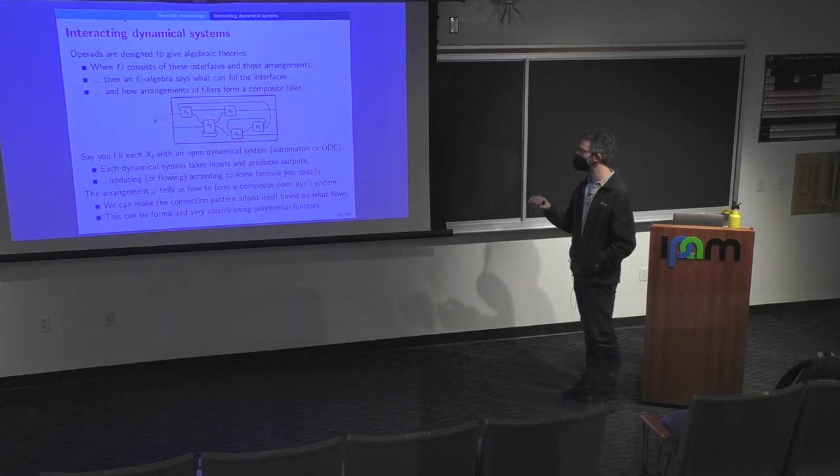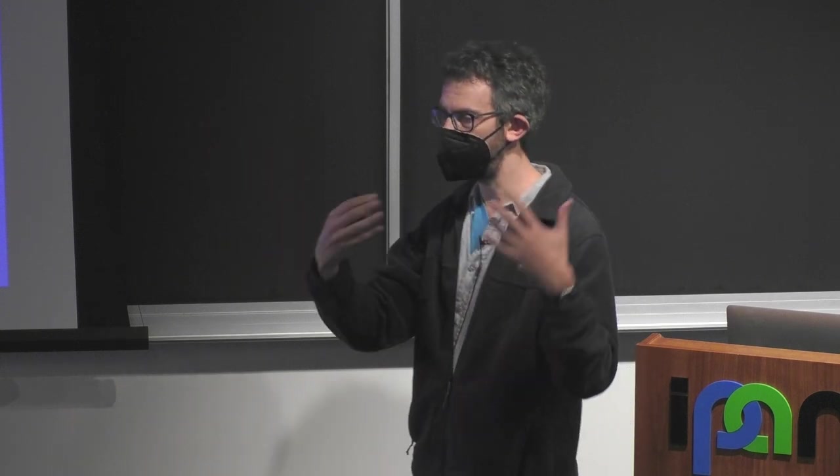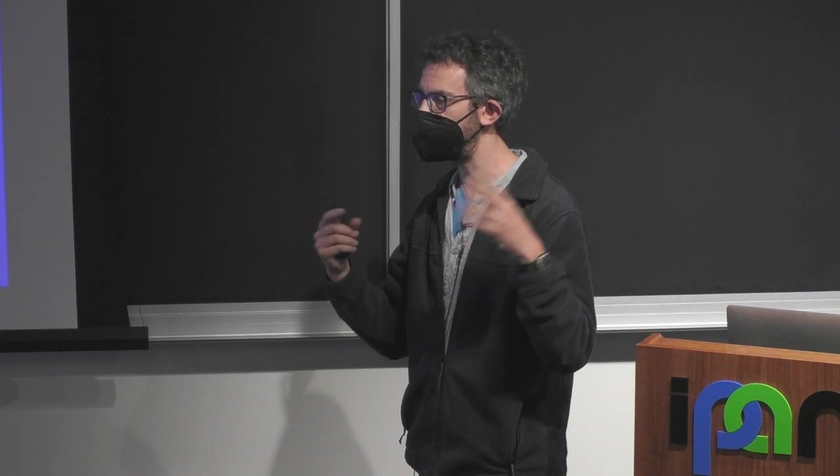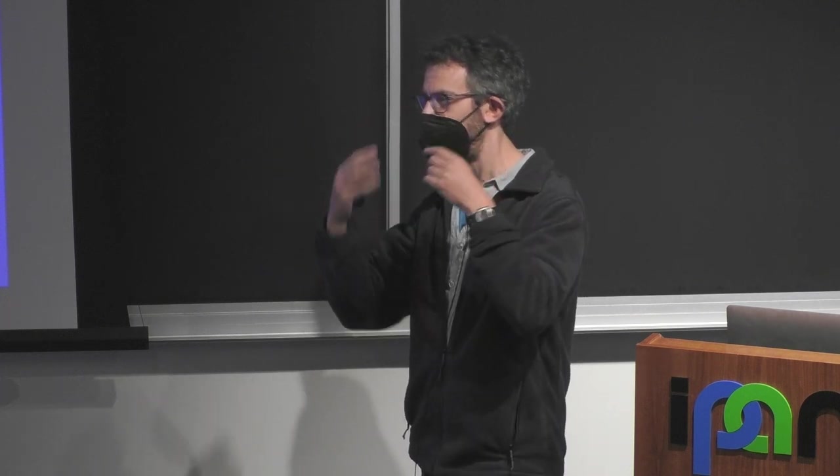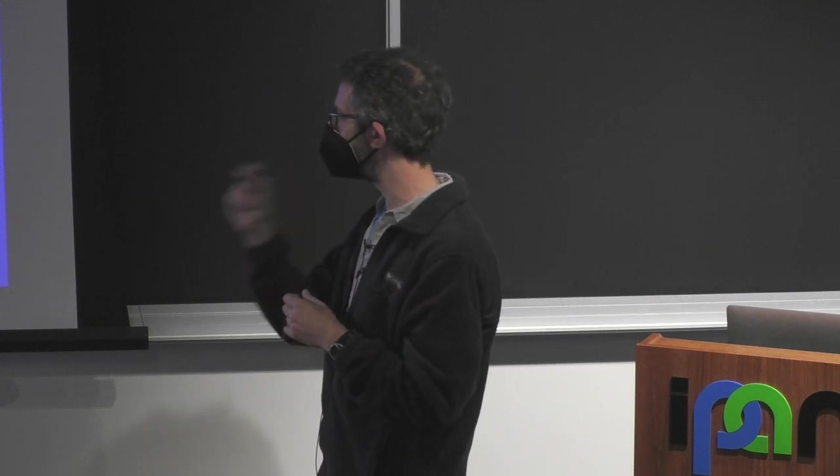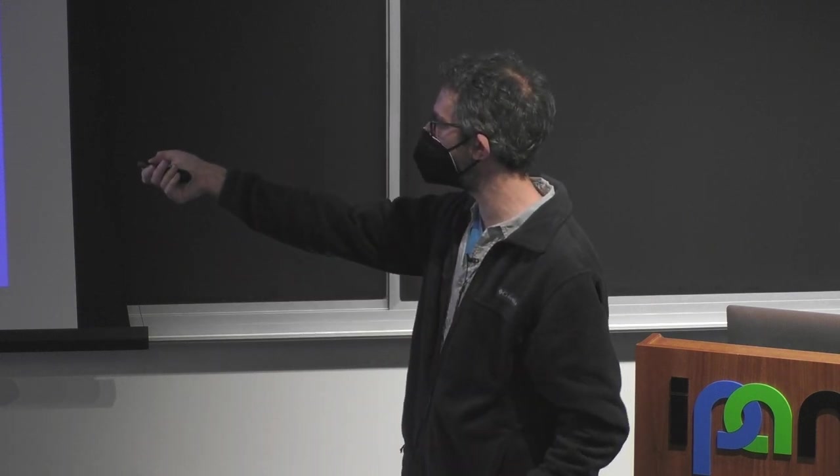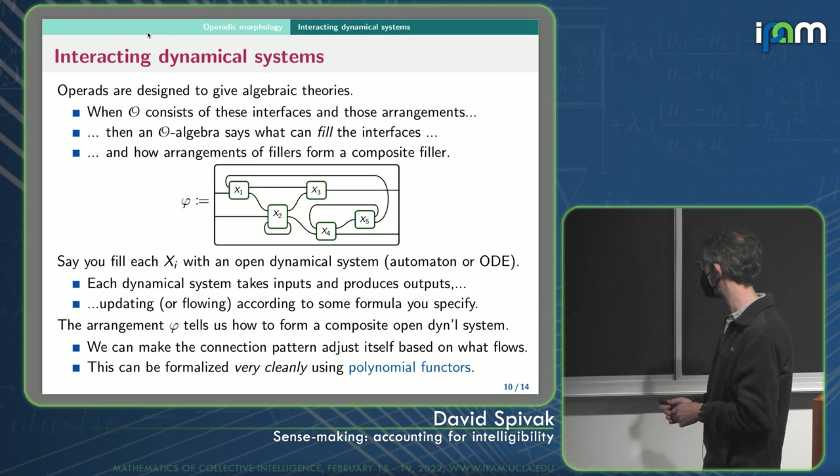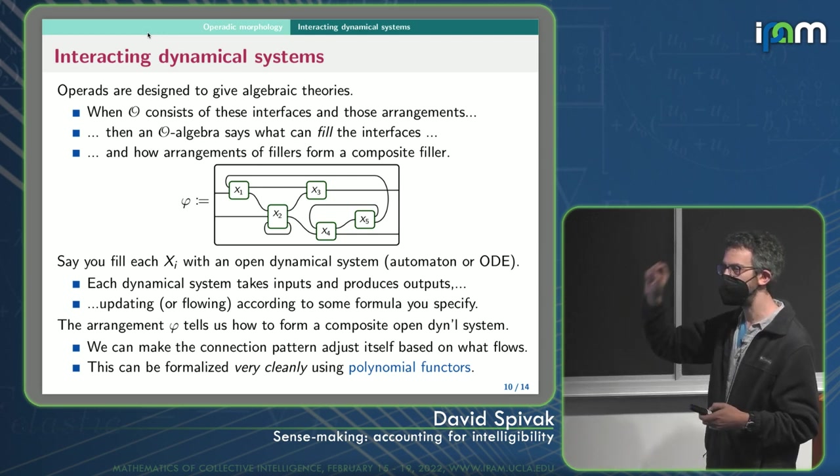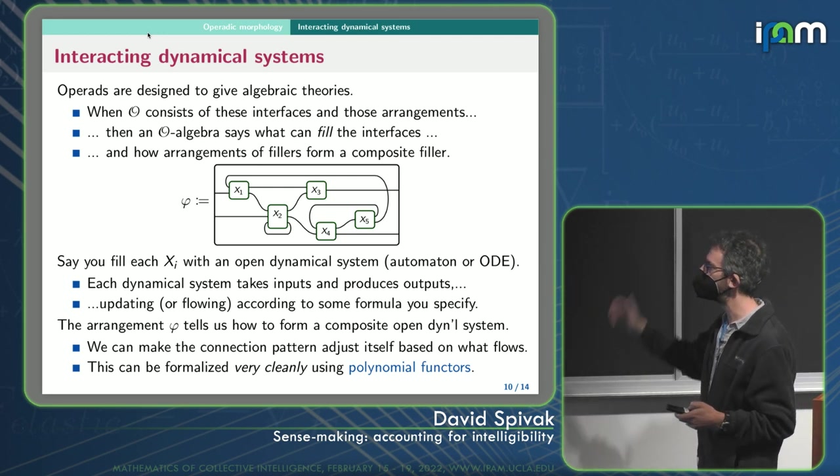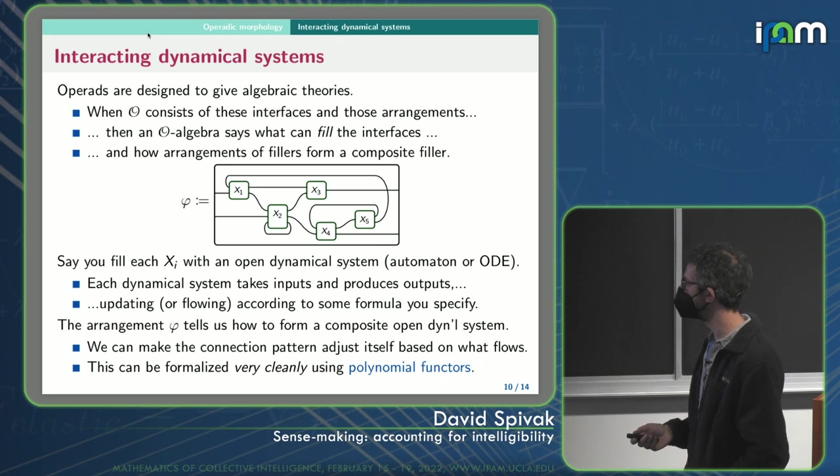So if you fill every box here with a dynamical system, an open dynamical system, like an automaton or an ODE, ordinary differential equation system, then what that would mean is that X1 is getting an input from its outside world and using those to update its state. So it's in some state, it's happy, then it receives this data, and now it moves to sad and it says Bob and then whatever. So it's saying stuff out of the output wires there. And those things are being received as inputs to the next dynamical system.